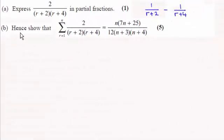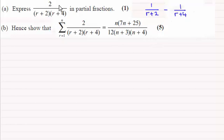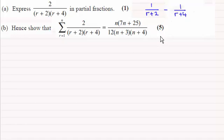Hi there. For this video I'm just dealing with part B of this question. The answer to part A, where we had to express this in partial fractions, was 1 over r plus 2 minus 1 over r plus 4. So if you'd like to have a go at this one and haven't had a chance already, just pause the video and when you come back I'll take you through the worked solution. Now in order to do this, we're using what we call the method of differences. If you're not used to this, do check out some of my video tutorials on it.